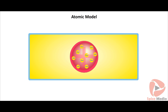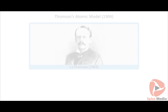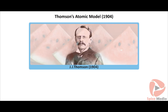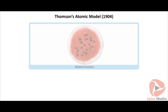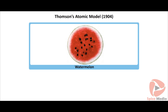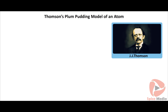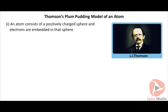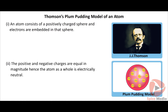An atom is the basis of all substances — matter is composed of atoms that have mass and occupy space, making the atom the center of attraction in 19th-century science. Thompson's atomic model (1904) can be compared with a watermelon: the red edible portion represents the positive sphere and the black seeds are like embedded electrons. According to J.J. Thompson, an atom consists of a positively charged sphere with electrons embedded in it; the positive and negative charges are equal in magnitude, so the atom as a whole is electrically neutral.